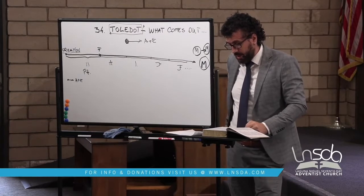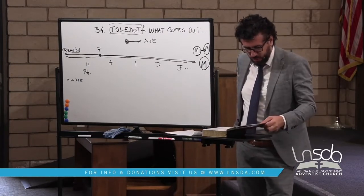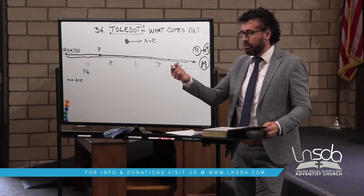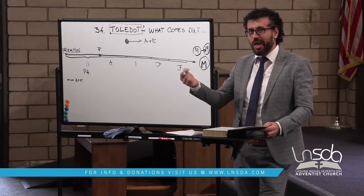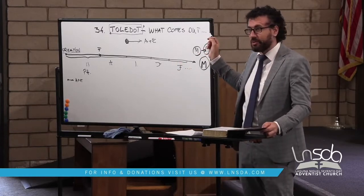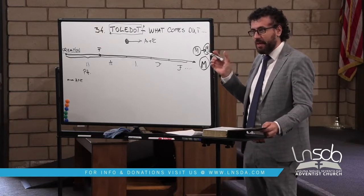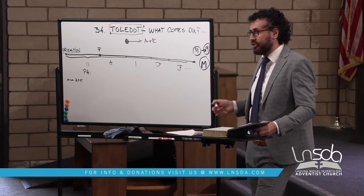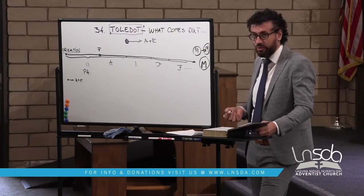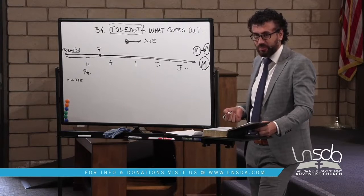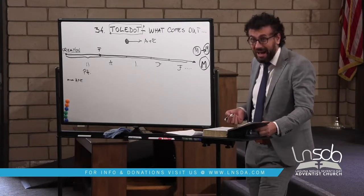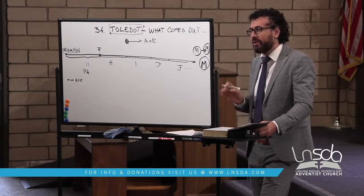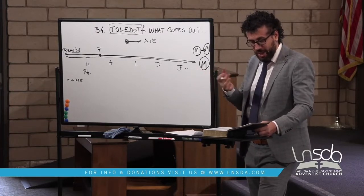The second Toledot appears in chapter 5, verse 1: 'This is the book of the genealogy of Adam.' The same word Toledot appears, but translated somewhat differently. If you read on, you will see a list of names — it is a genealogy, the names of those that came out. The NIV uses 'account,' keeping it consistent. Out of Adam come those descendants going all the way down to Noah.